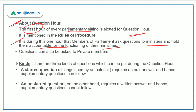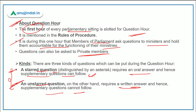Questions can also be asked to private members about their Lok Sabha constituency. Questions in Question Hour are of three types: starred questions, unstarred questions, and short notice questions. Starred questions require an oral answer, so supplementary questions can follow. Unstarred questions require a written answer, and there is no provision for supplementary questions. For unstarred questions, the MP has to give an advance notice of 15 days.